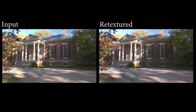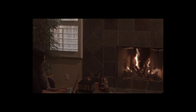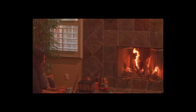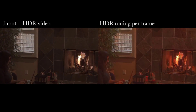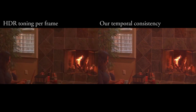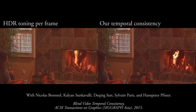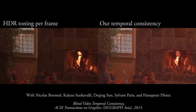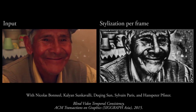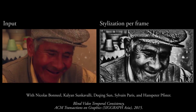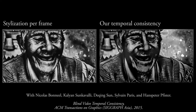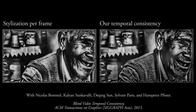Applying filters to videos often leaves us with a flickery result because what looks like a minor frame-to-frame visual change is actually a large change to the image operation. We can create temporally consistent results for most image operations, like high dynamic range toning or stylistic transformations, even without knowing anything about how the image operation works.